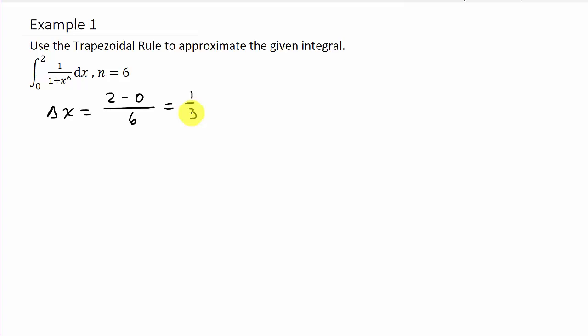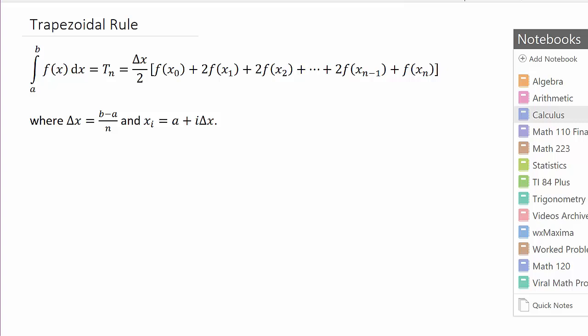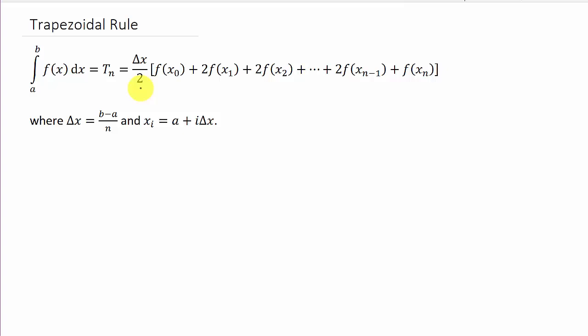Now, t sub 6 is equal to, so let's go back and look at the formula. Alright, so that's delta x over 2, and we've got delta x, which is 1 third. And then f of x naught. So, the first number, f of x naught, that's going to be a, that's going to be this limit. And then, how is delta x increasing? It's increasing by a third, right? So, this is when i is 0, then we're at a. When i is 1, we're at 1 third. When i is 2, we're at 2 thirds, and so on. But basically, we're starting out here, and then we're going to add delta x to each one until we get to 2.